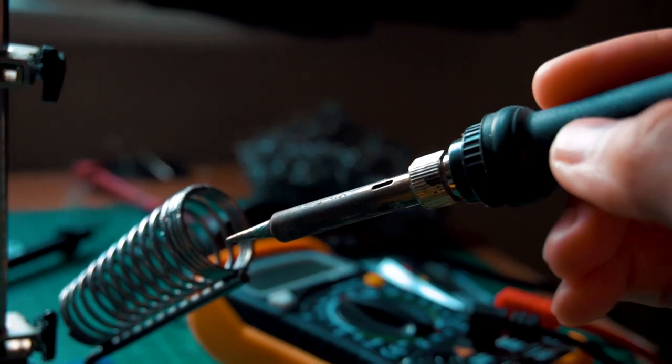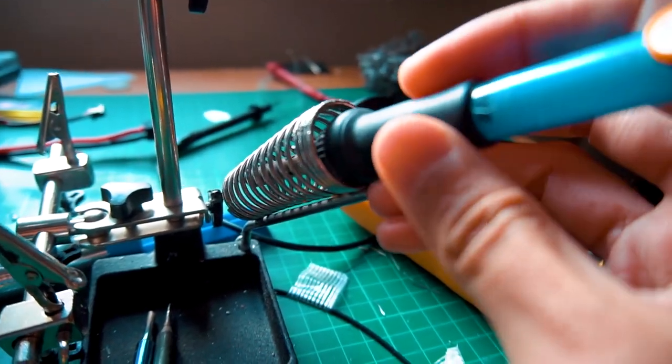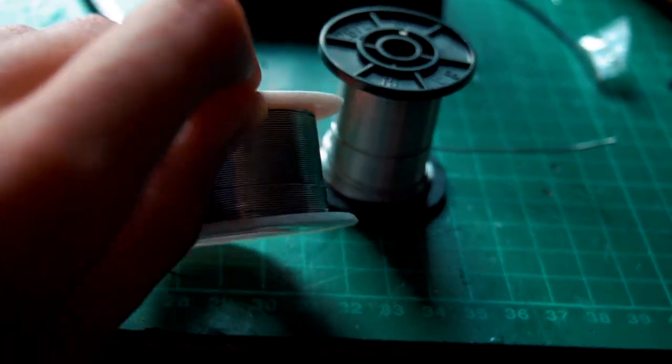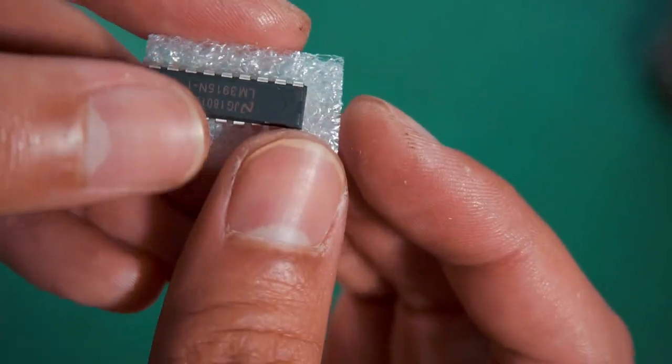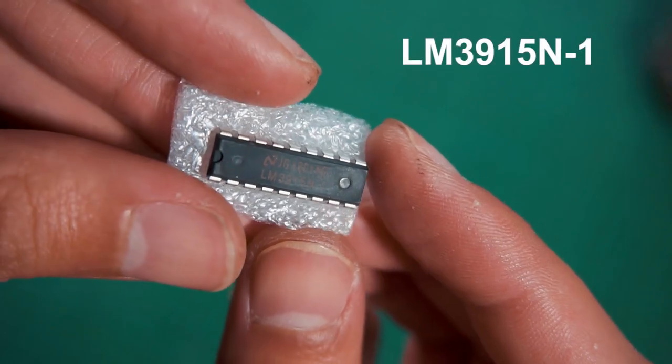To complete this kit you will need a soldering iron and solder. If you don't have one you can find cheap ones on the internet and there are many different models. I'll leave a link in the description for this DIY kit and also for the soldering iron that I'm using.